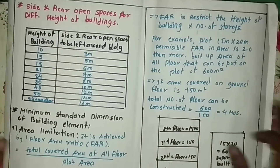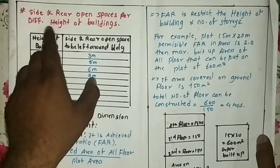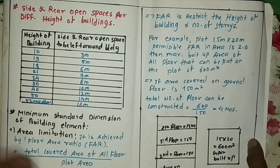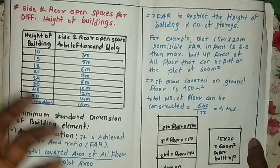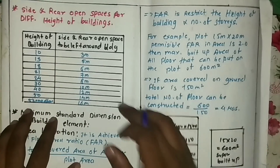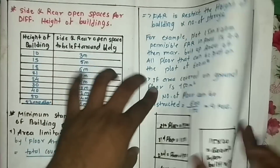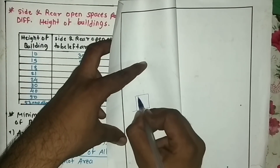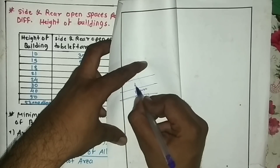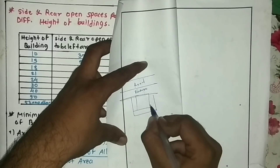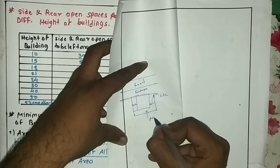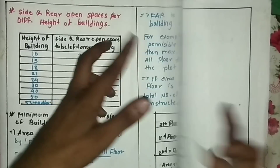Now we come to side and rear open space for different heights of building. For capturing natural light and ventilation, we also need side and rear open space. According to building height, building bylaws specify some distance to be left on the back and sides of the building. If this is your plot, you also have to keep a side margin and a rear margin.